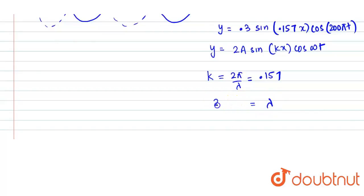Lambda value would be 2π, π is 3.14 divided by 0.157. That would become 2 into 20 which is 40 meter. This is what the wavelength is.